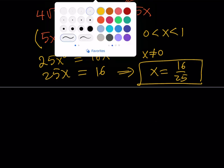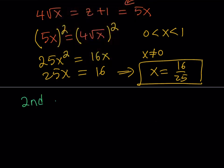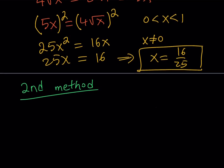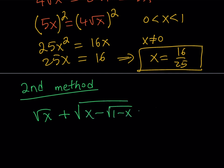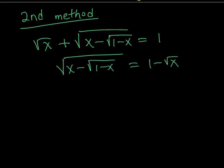Here's the second solution method. The second method involves the usual squaring of both sides. Our original problem says: the square root of x plus the square root of (x minus the square root of 1 minus x) is equal to 1. What I'll do here is isolate the radical on the left-hand side — one radical stays on the left, and I'll put the other radical on the right-hand side. Then I'll square both sides.